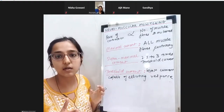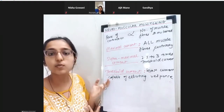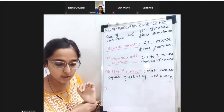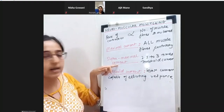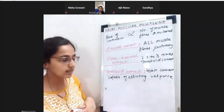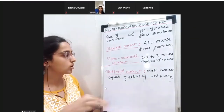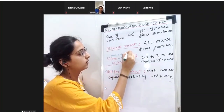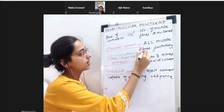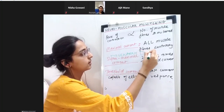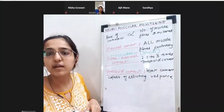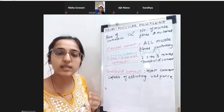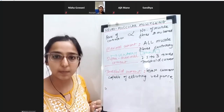The nerve most commonly chosen for neuromuscular monitoring is the ulnar nerve. The supra-maximal current for the ulnar nerve is 30 milliampere - if you are doing ulnar nerve stimulation, the supra-maximal current is 30 mA.